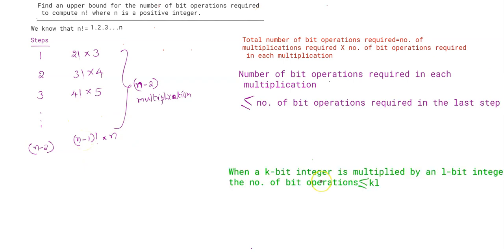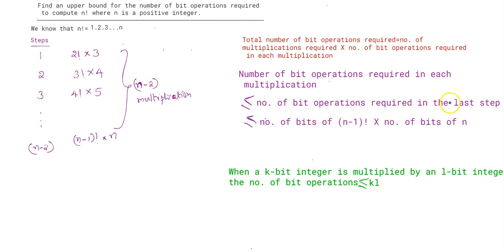We know that when a k-bit integer is multiplied by an l-bit integer, the number of bit operations is less than or equal to k × l. So the number of bit operations required in the last step of our algorithm will be less than or equal to the number of bits of (n−1) factorial times the number of bits of n.